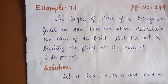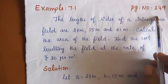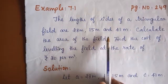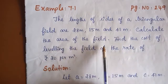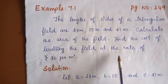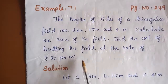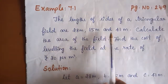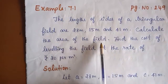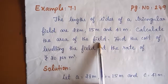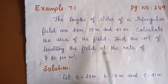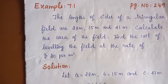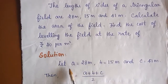Example 7.1, page number 249: The lengths of sides of a triangular field are 28 metres, 15 metres, and 41 metres. Calculate the area of the field. Find the cost of leveling the field at the rate of rupees 20 per metre square. The sides are given as 28, 15, and 41 metres. We need to find the area of the triangle and then calculate the total leveling cost.